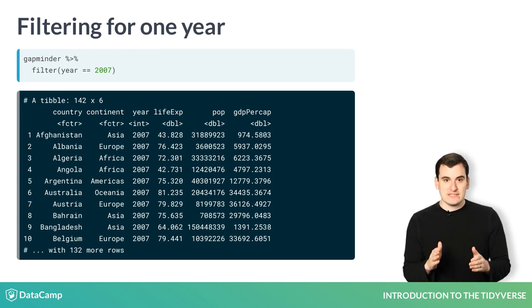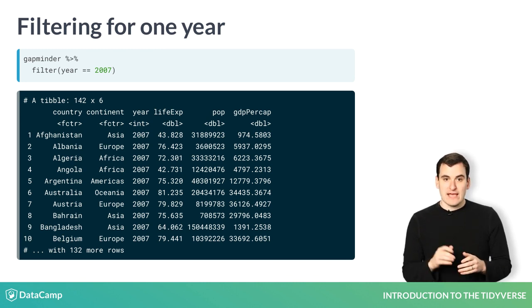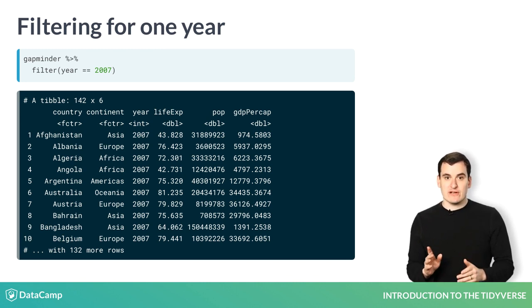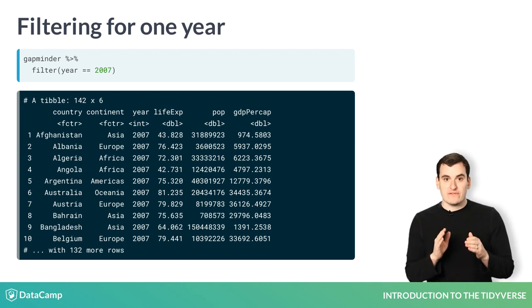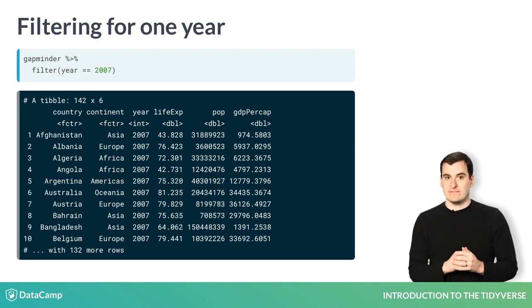It's important to note that you're not removing any rows from the original Gapminder data. You can still use the Gapminder object for other analyses, and it won't be any different than it was before. Instead, filter is returning a new data set — one with fewer rows — that then gets printed to the screen.